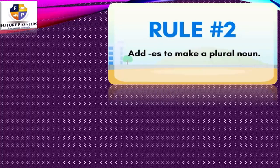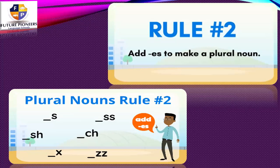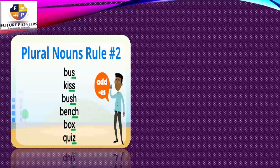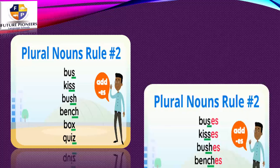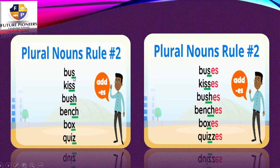Rule number two: add ES to make a plural noun. When? If I find at the end of my word S, or double S, or double Z, or SH, or CH, or X — what should I do? Add ES to turn it to a plural noun. Now I have singular nouns: bus, kiss, push, pinch, box, quiz. I have at the end S, SS, SH, CH, X — so I have to add ES to turn them to plural nouns.